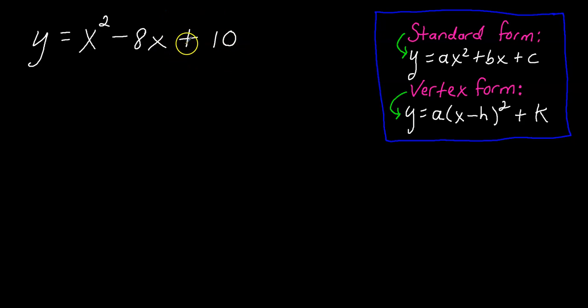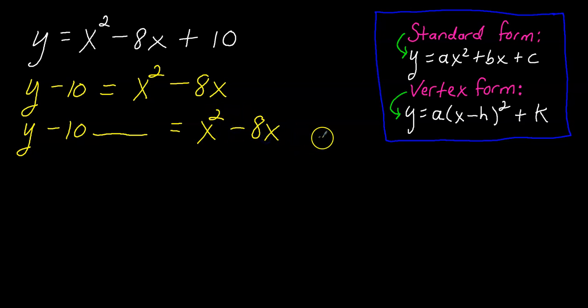The first step here is to get this plus 10 to the other side. So I'm going to move the plus 10 to the left hand side of the equation. That's just going to change the sign. So it's going to become y minus 10 equals x squared minus 8x. So again, all I did was put the plus 10 to the other side of the equation and that switched the sign.